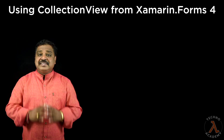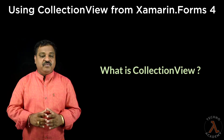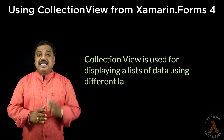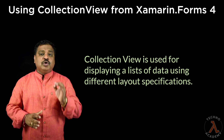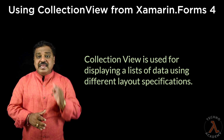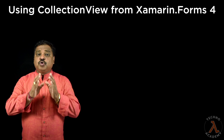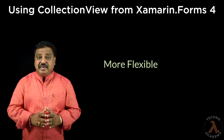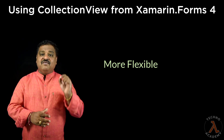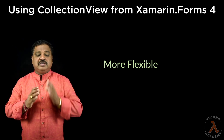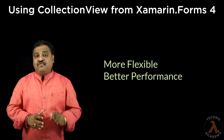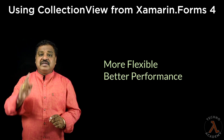Now first let us understand what is a Collection View. In simple terms, a Collection View is used for displaying a list of data using different layout specifications. The main aim of Collection View is to provide more flexibility while displaying the list of data in multiple columns in vertical or horizontal grid, and also to provide better performance when compared with the ListView.